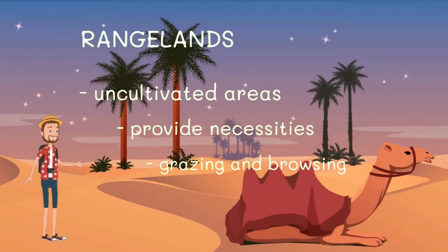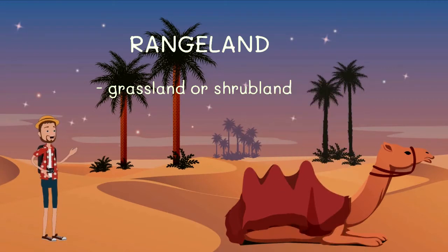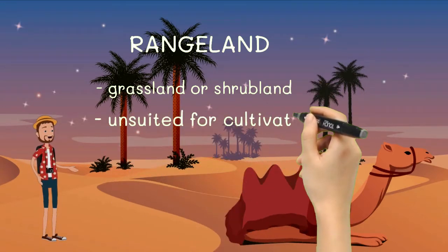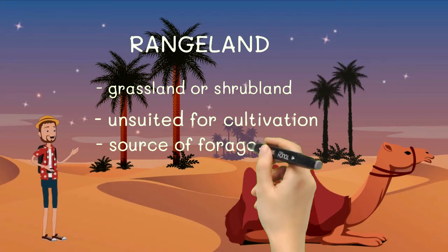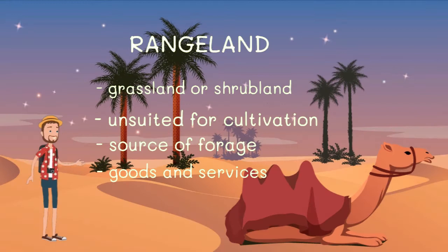Rangeland also refers to uncultivated areas that will provide the necessities of life for grazing and browsing animals. Uncultivated means no human intervention or no farming and cultivation happened in the area. In addition, rangeland is a natural grassland or shrubland that is unsuited for cultivation and which is the source of forage for free-ranging native and domestic animals, as well as the source of wood products, water, and wildlife. So it is a naturally existing ecosystem, not a man-made one.